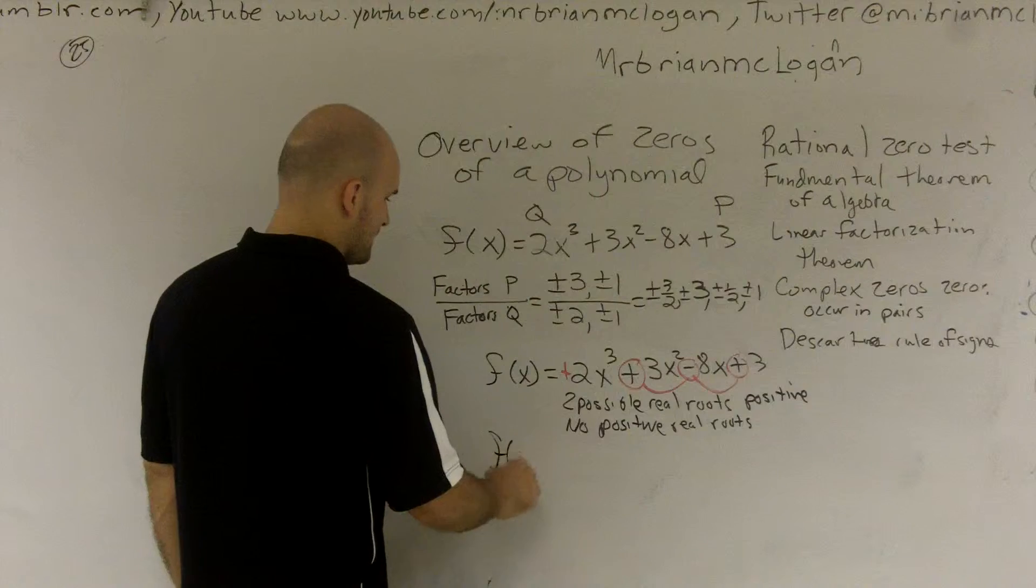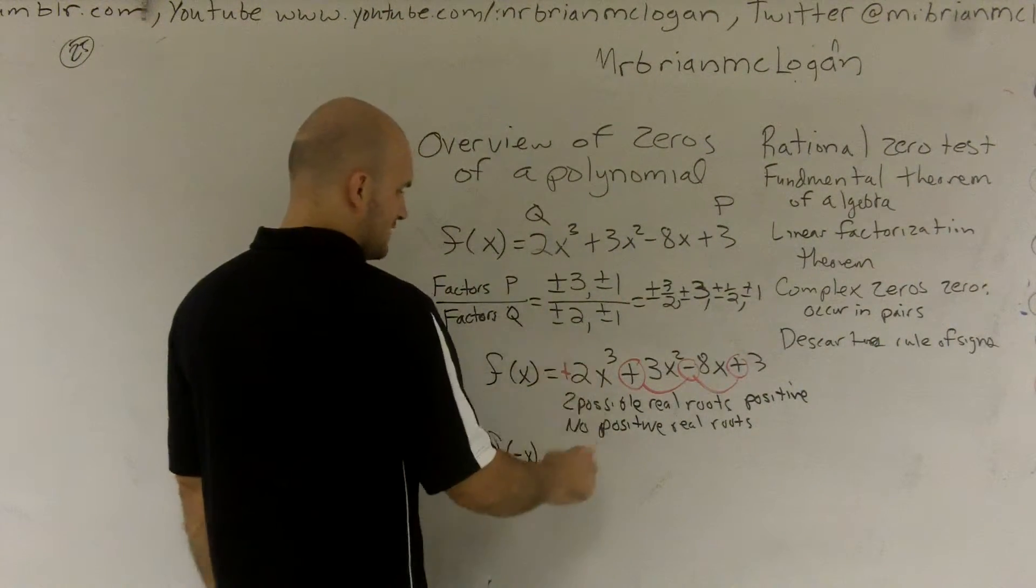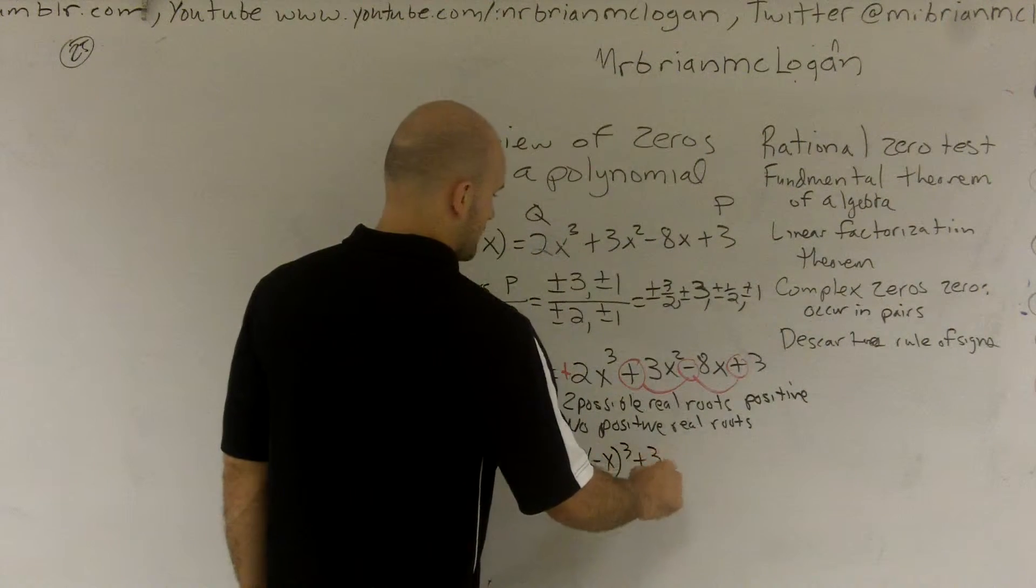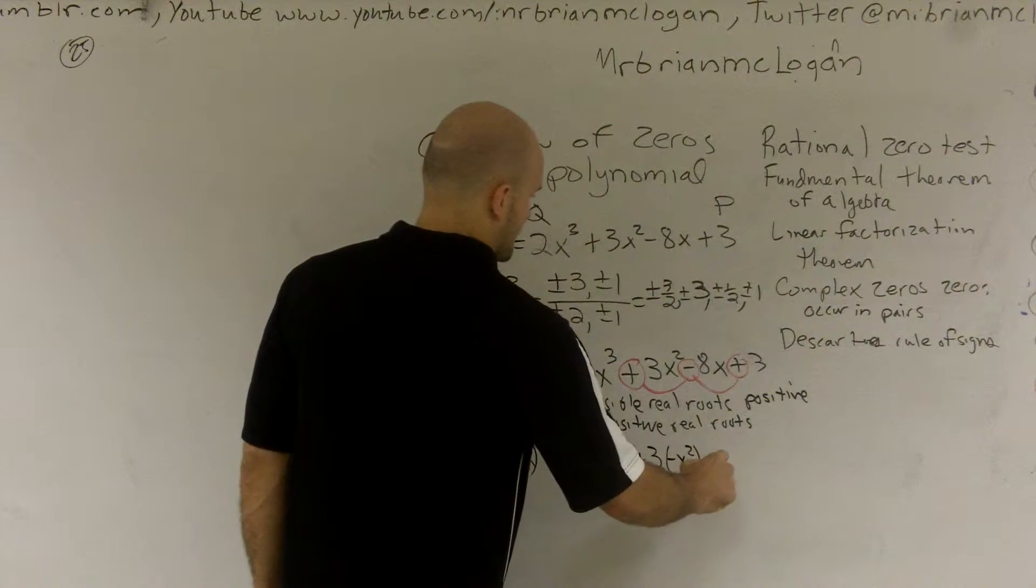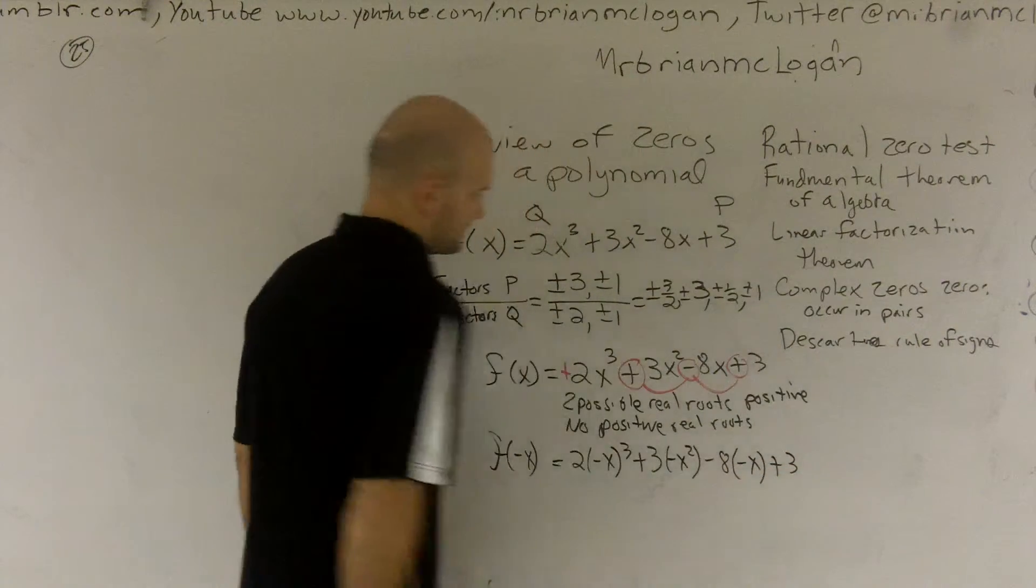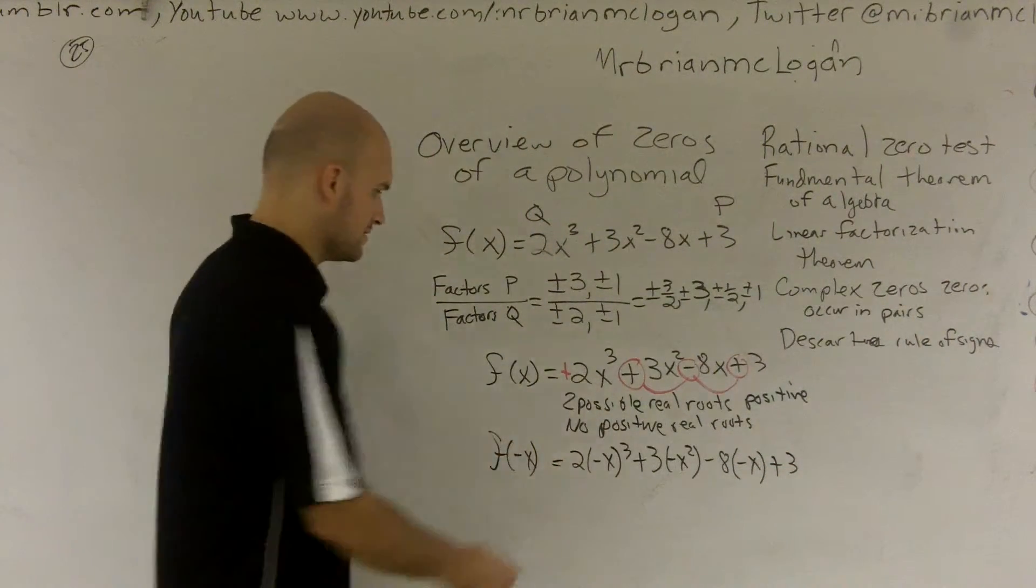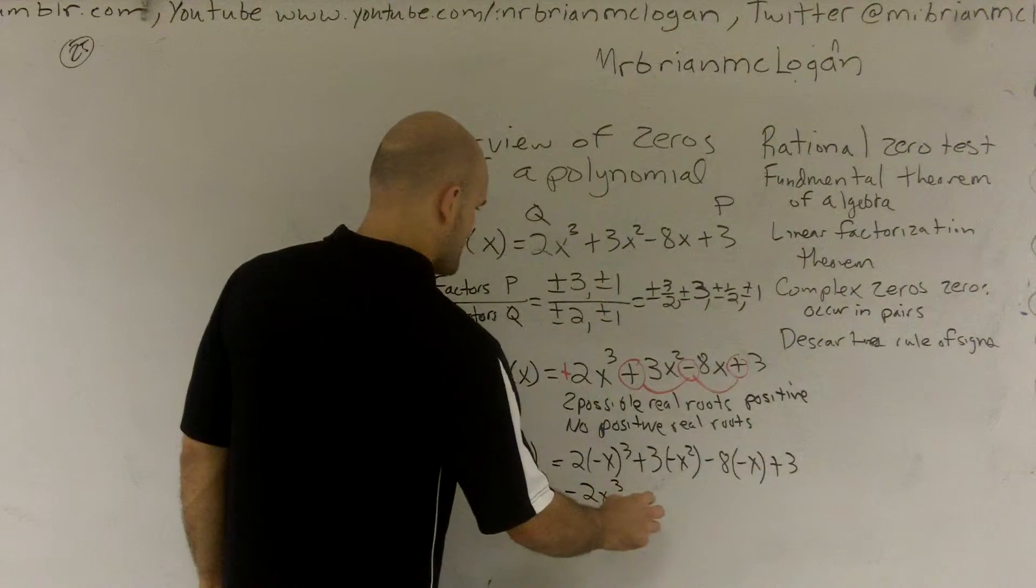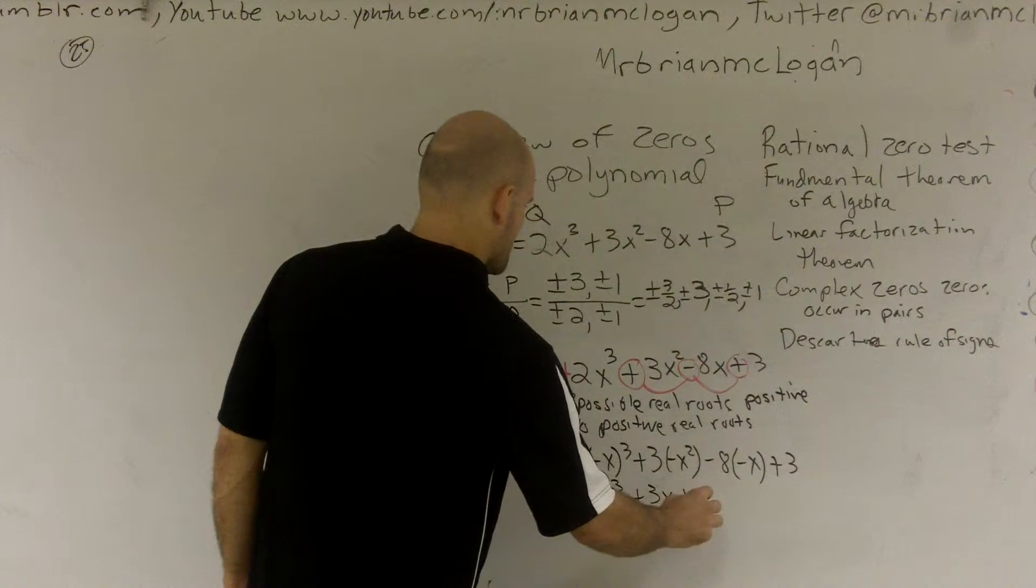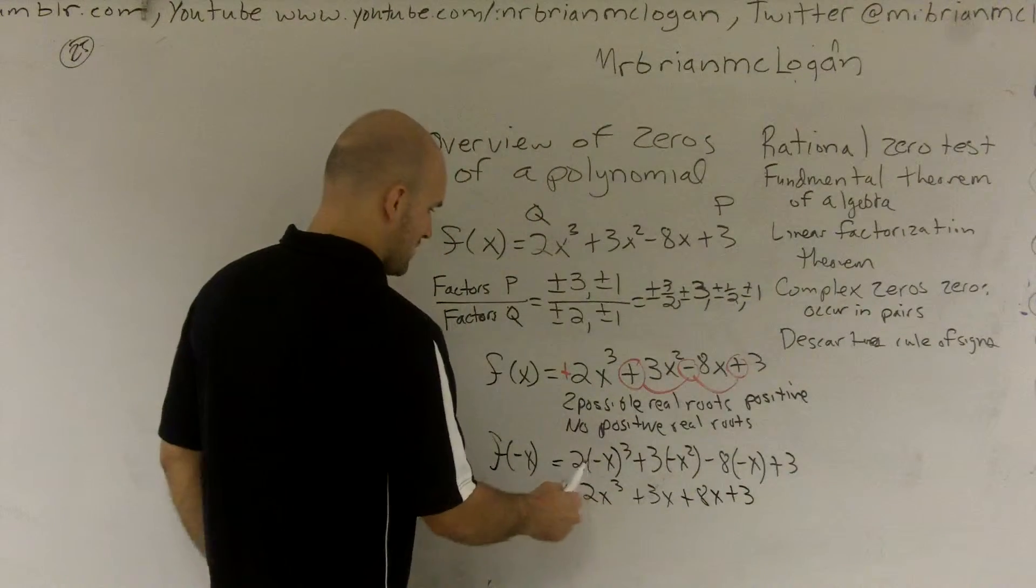Then to find out the negative, all you do is plug in negative x. So you do 2(-x)³ + 3(-x)² - 8(-x) + 3.